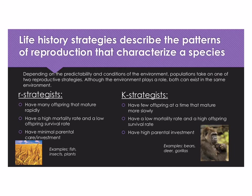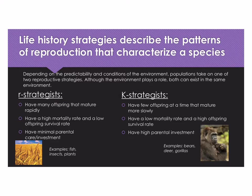There are two main strategies having to do with reproduction that species may follow. This will be dependent on conditions of the environment, but within a particular environment, you might see either one of these. The first is called an R-strategist. R-strategists tend to have many offspring that mature rapidly. They have a high mortality rate and a low offspring survival rate, and very minimal parental care and investment.